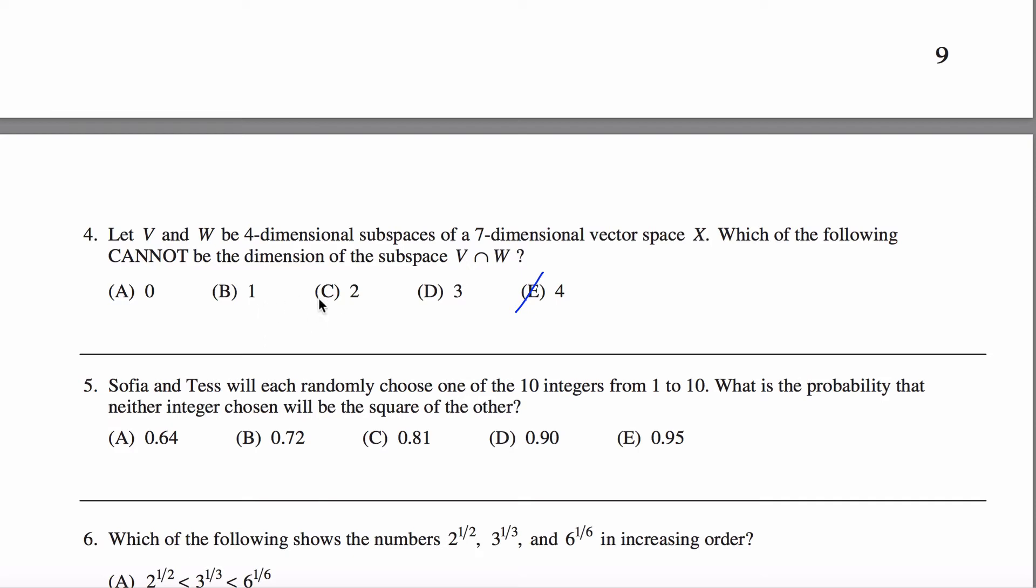So that can't possibly be my answer because that's certainly possible. And you can do the same thing with three, two, and one. I kind of have seven dimensions to play with. So I mean, this is very informal. Use up four of those dimensions for V, and then I think about what I'm doing for W. If I want these guys to intersect as little as possible...